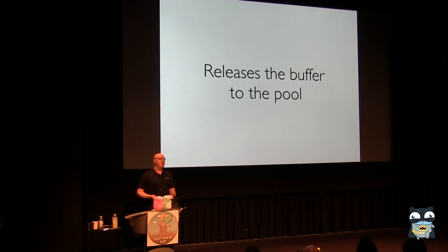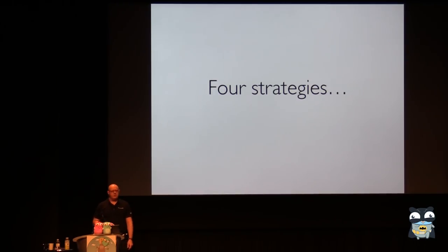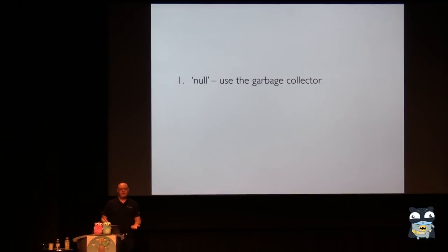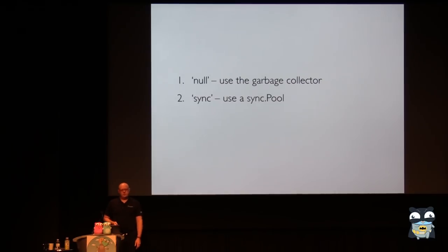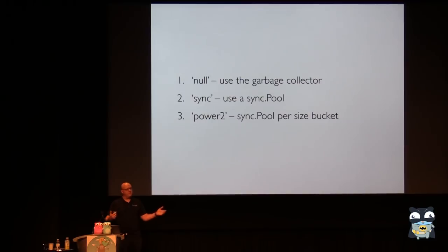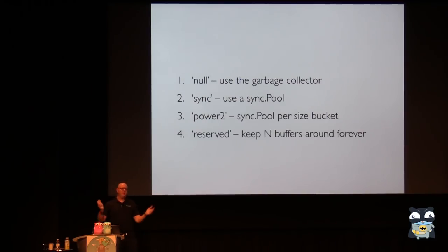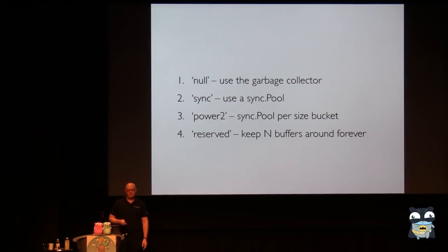I'm going to show four different strategies for managing memory. The first is the null strategy — we're going to actually use the garbage collector, intermediated through this abstraction. Second is sync, where we'll use a sync.Pool. Third is power-of-two, where we use multiple sync.Pools, one per size bucket, to make a more size-aware structure. And the last is reserved — we just keep a number of buffers around forever for the life of the program and try to never give anything back to the garbage collector at all.